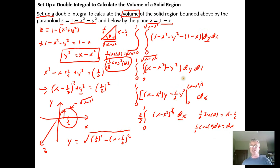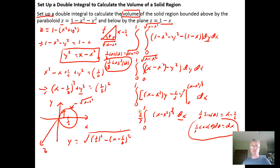Combining the pieces: (2/3) times (1/8) times (1/2) gives 1/24. Multiplying cosine cubed by cosine gives cosine to the fourth power of theta. So the integral becomes (1/24) times the integral of cosine to the fourth theta d-theta, after changing the bounds of integration accordingly.